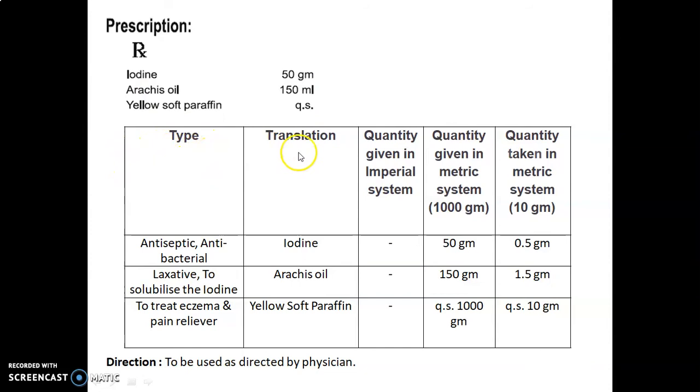Formula table is given here. Type, translation (name of ingredient), quantity given in imperial system is not available as we have quantities directly in metric system. Quantity given in metric system for 1000 grams, quantity taken to prepare 10 grams: Iodine used as antiseptic and antibacterial, 50 grams given, so taken quantity 0.5 grams. Arachis oil used as laxative and to solubilize the iodine, 150 grams given, taken 1.5 grams. Yellow soft paraffin treats eczema (swelling or edema), inflammation, and pain, quantity sufficient to 1000 grams given, quantity sufficient to 10 grams taken. Direction: to be used as directed by physician.